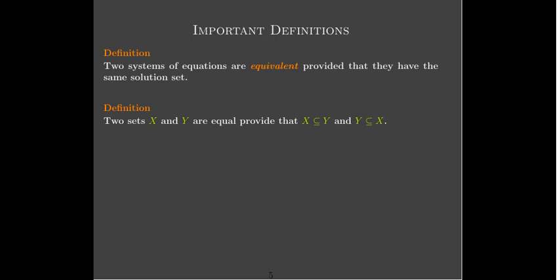A couple of important definitions. Two systems of equations are equivalent provided that they have the same solution set. The formal definition for two sets to be equal is that x is a subset of y and y is a subset of x — in other words, every element in x is an element of y and every element in y is an element of x.